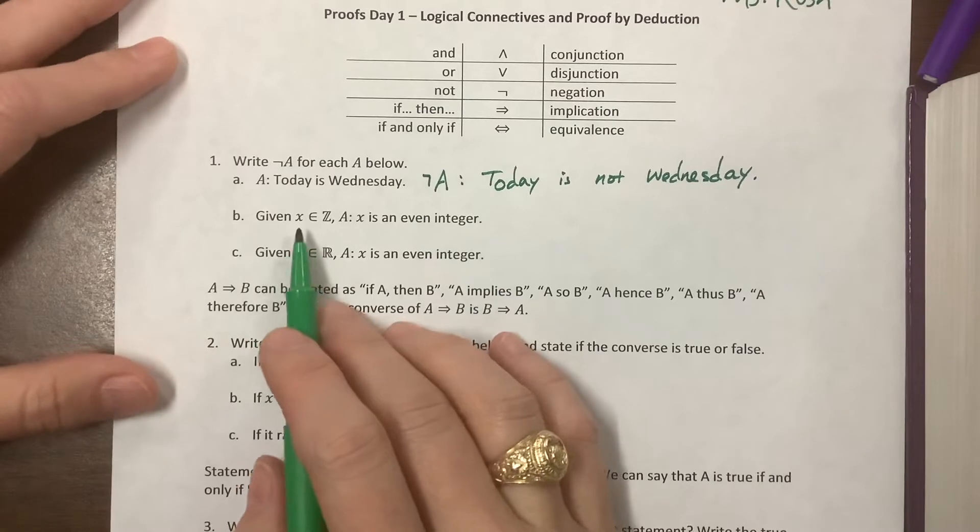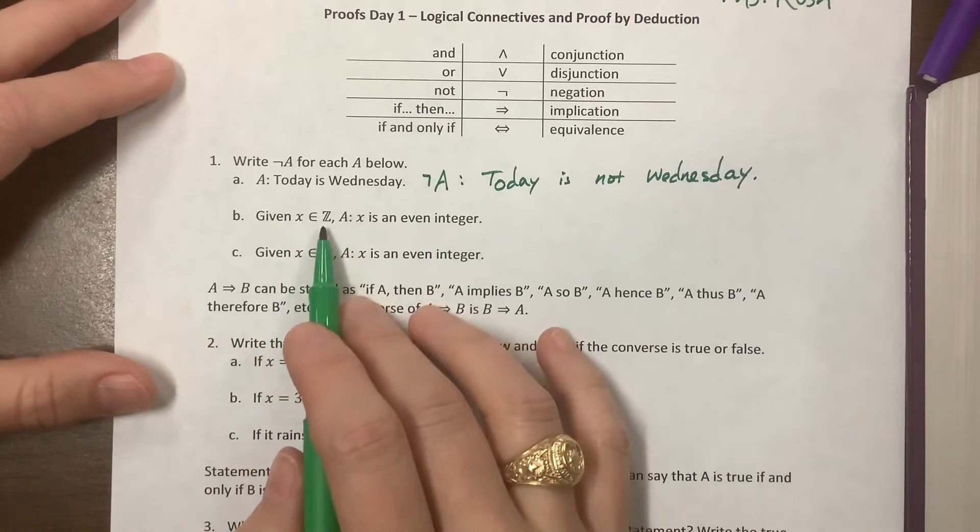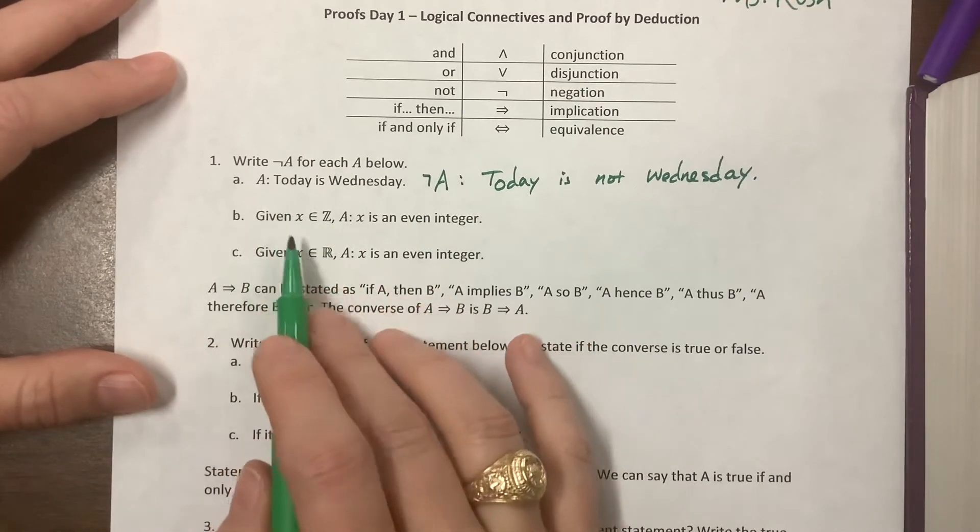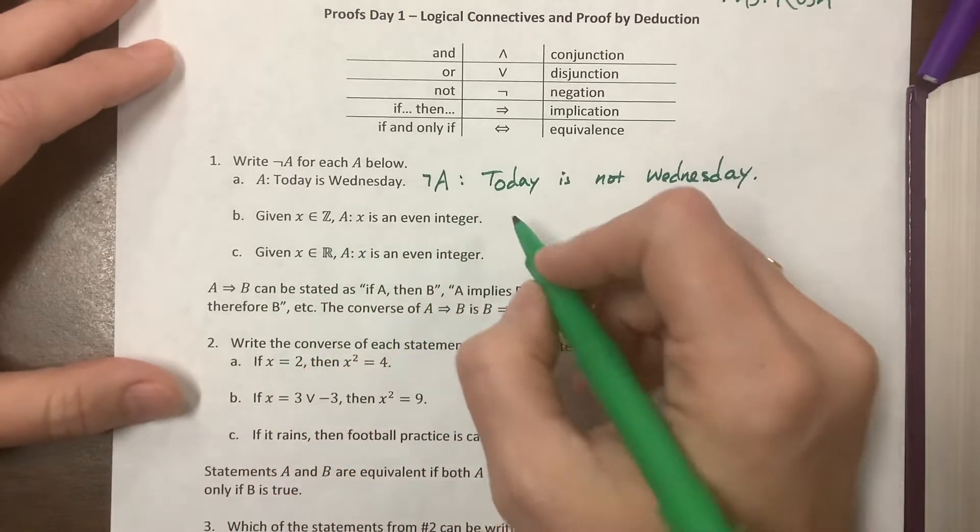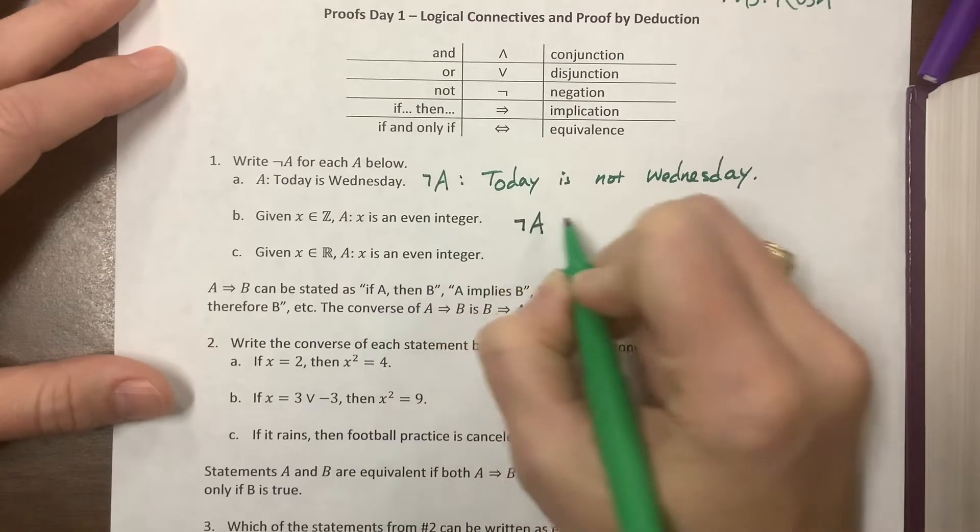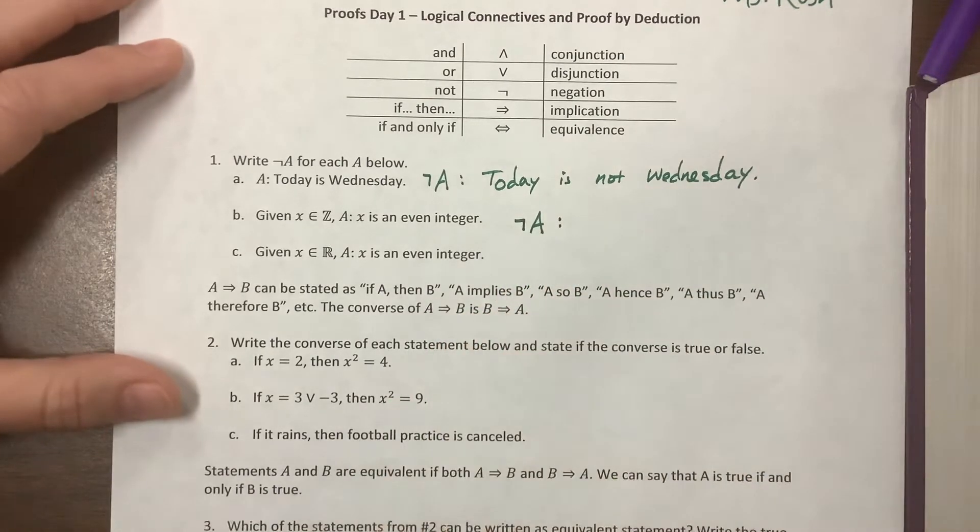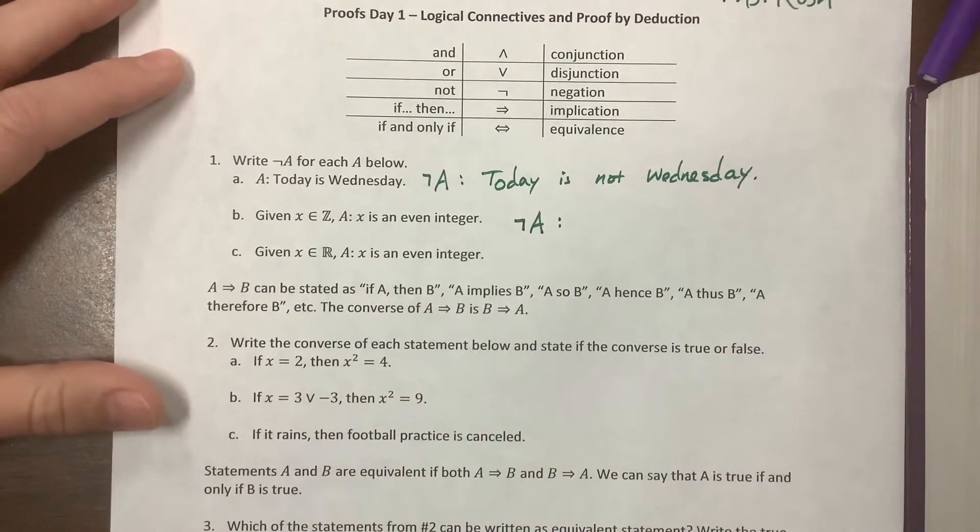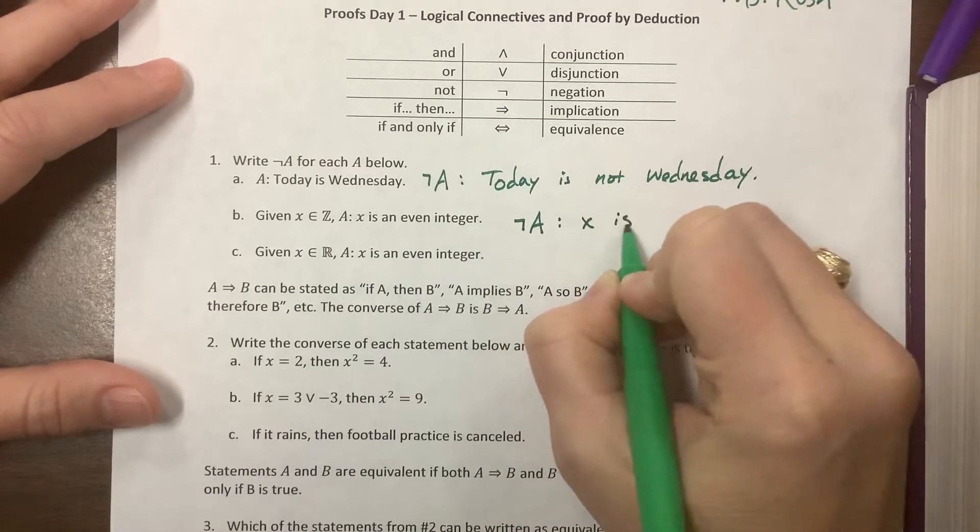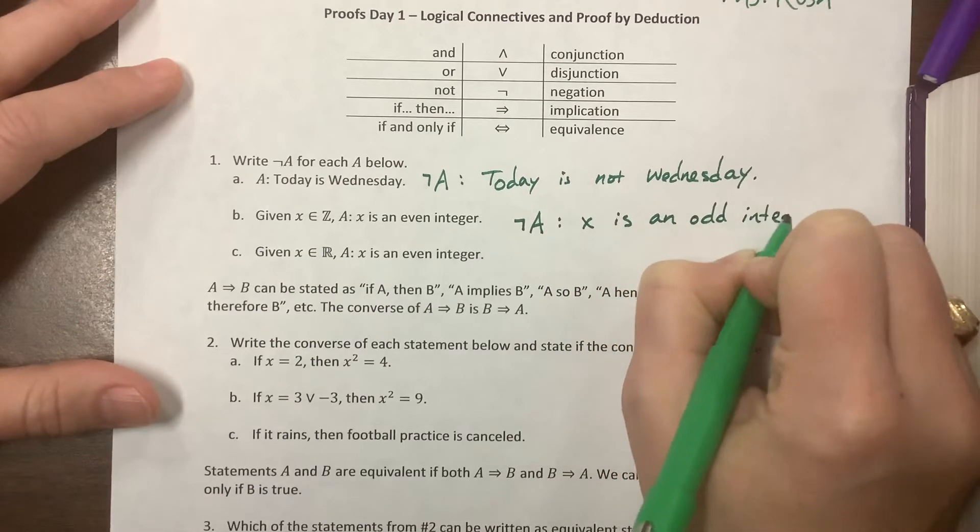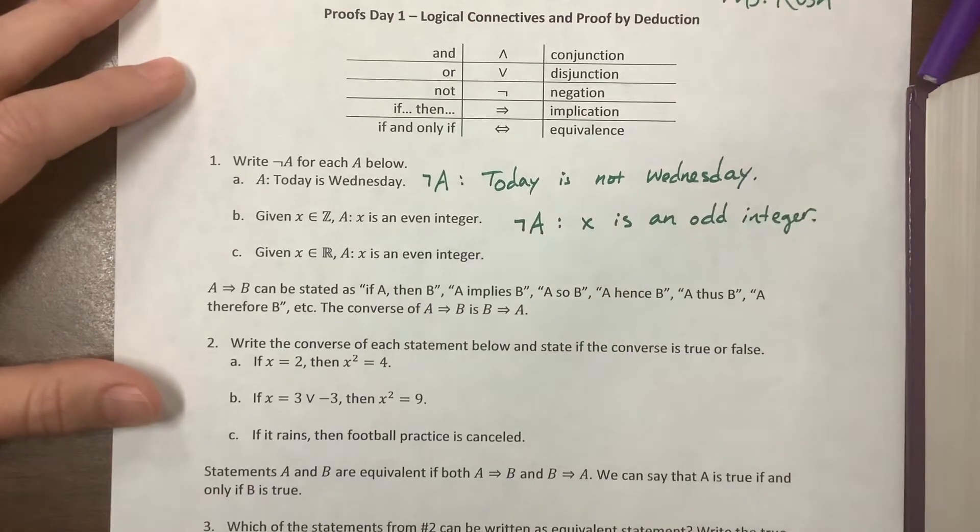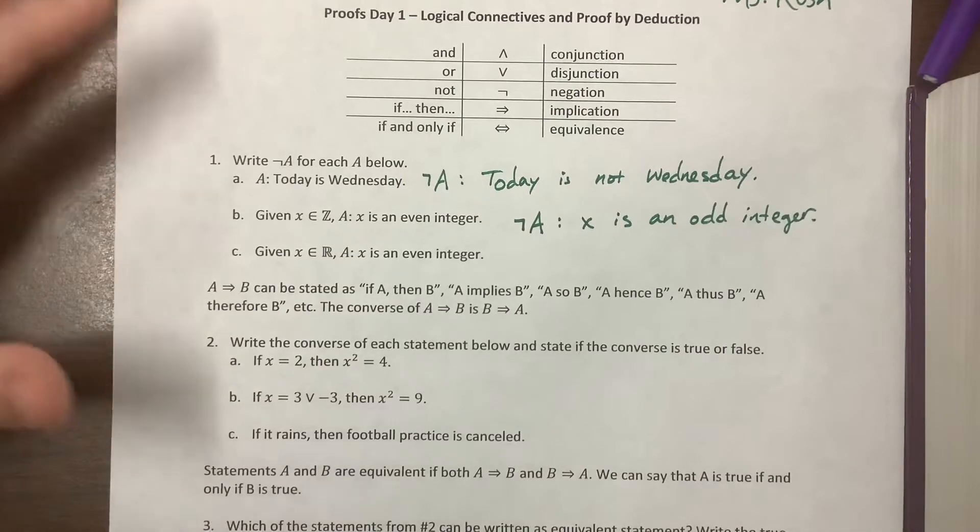The next one: given x is an element of the integers, so x has to be an integer. Our statement A is 'x is an even integer.' In this case, 'not A' would be, if it's an integer and it's not even, it has to be odd. So we say 'x is an odd integer,' because if you're an integer, you're either even or odd.